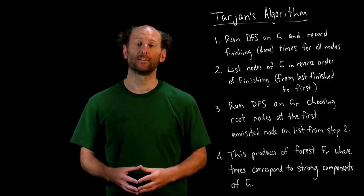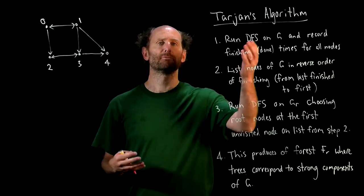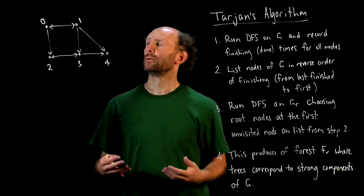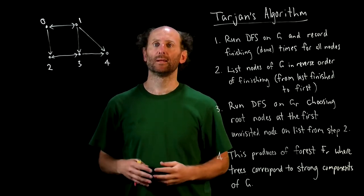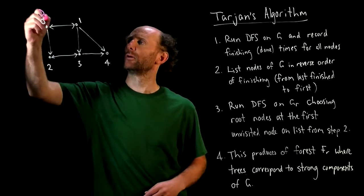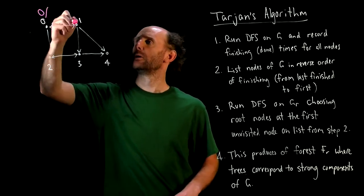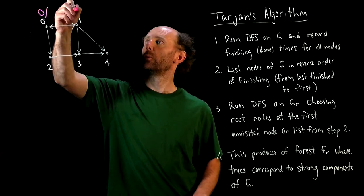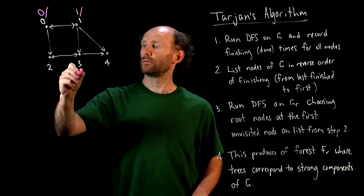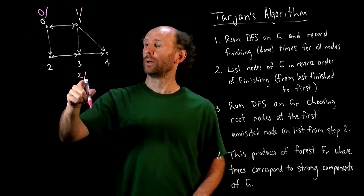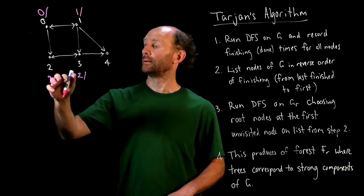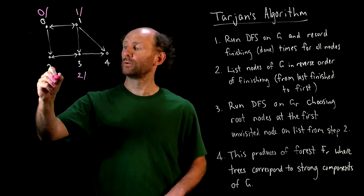So let's look at an example. So the first step of running Tarjan's algorithm is that we run DFS on our graph, so I'll do that recording seen and done times as we go. So we'll start at node 0 at time 0, we'll move to node 1 at time 1, down to node 3 at time 2, then we'll move to node 2 at time 3,